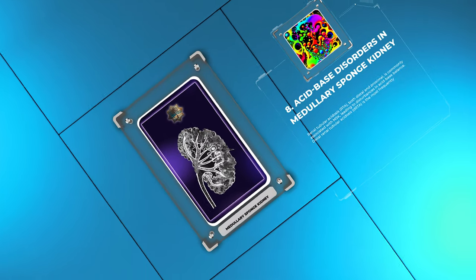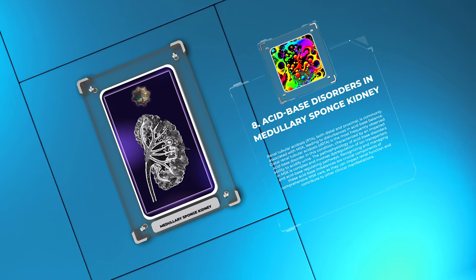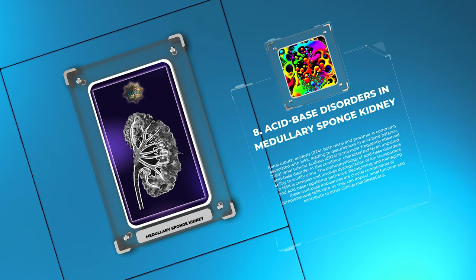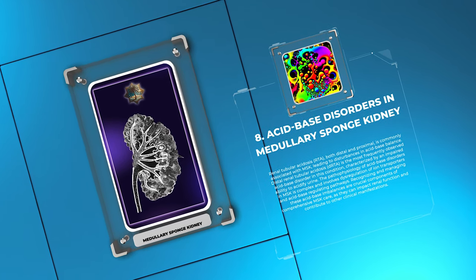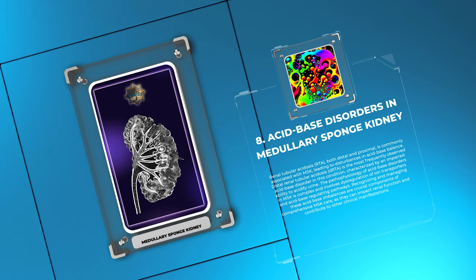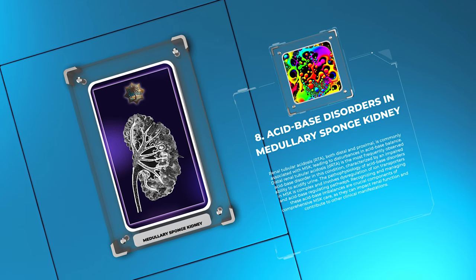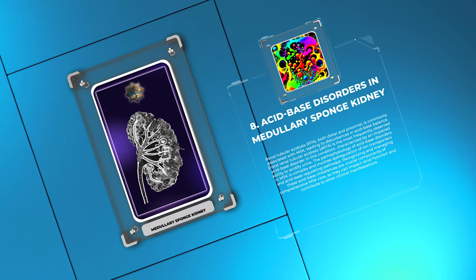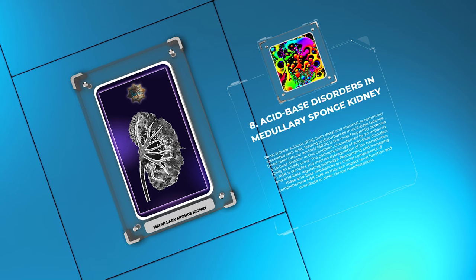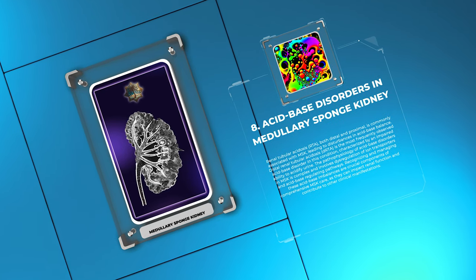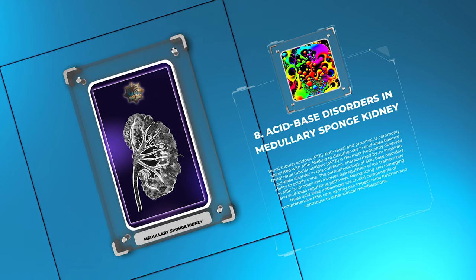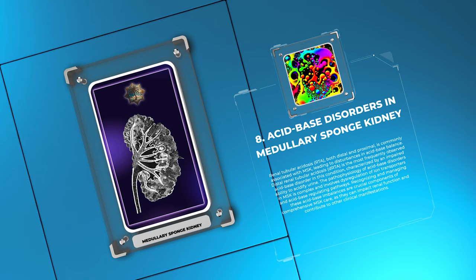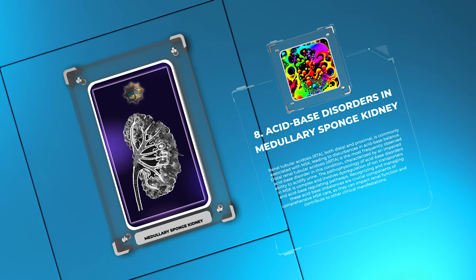Renal tubular acidosis, RTA, both distal and proximal, is commonly associated with MSK, leading to disturbances in acid-base balance. Distal renal tubular acidosis, DRTA, is the most frequently observed acid-base disorder in this condition, characterized by an impaired ability to acidify urine. The pathophysiology of acid-base disorders in MSK is complex and involves dysregulation of ion transporters and acid-base regulating pathways. Recognizing and managing these acid-base imbalances are crucial components of comprehensive MSK care, as they can impact renal function and contribute to other clinical manifestations.